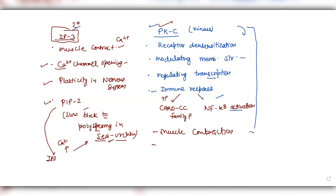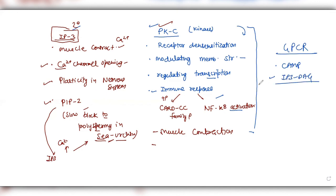So these were the functions of this pathway. This is all about the IP3-DAG pathway, which is a pathway from the GPCR — other than the cAMP pathway. Hope you liked the video. If you really liked the video, kindly share and subscribe to the YouTube channel Botany for All. Thank you very much, have a good time.